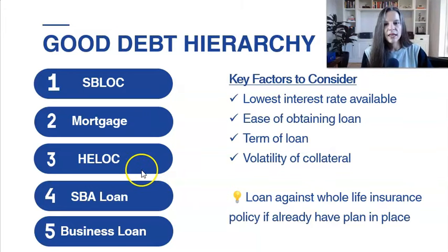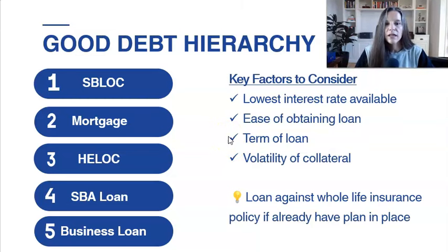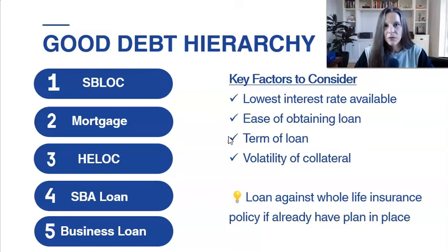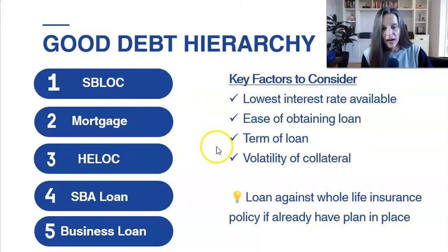Mortgages and HELOCs are a little bit easier to get, but interest rates are usually a little bit higher and you don't get as long a term — that's why mortgages come second. Term of the loan: you want as long as possible. I like to not have to pay it back. As long as it's a form of good debt with a decent interest rate, you don't want to pay that off. Contrary to what Dave Ramsey says, you do not want to pay off good debt any faster than you need to. You want to pay off low interest rate debt as slow as possible. I think one of the most dangerous things people do is pay down low interest rate debt in high inflationary environments faster than they need to. You never want to pay off low interest rate debt quicker than necessary. I like as long a term loan as possible.